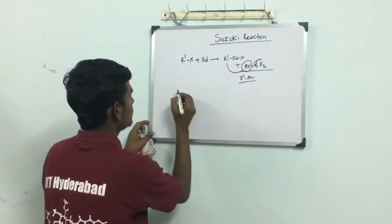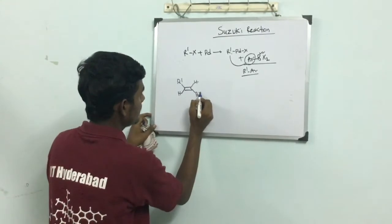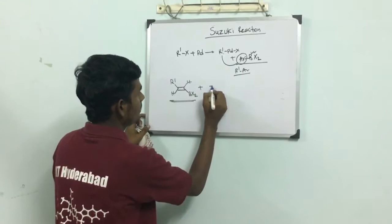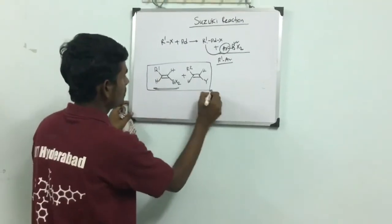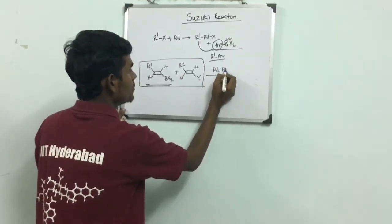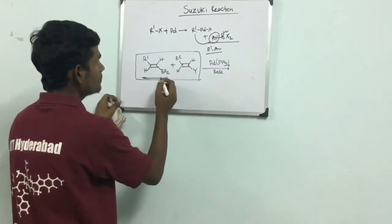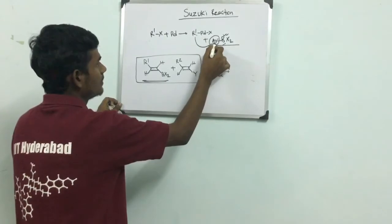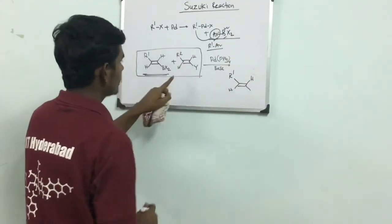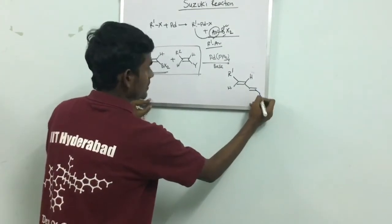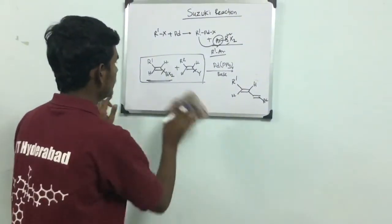I am writing the general way of what this reaction typically looks like. We have an alkyl R1 with H and H, here BX2 that is the boron compound, and the other compound R2 with H, H and Y. These two reactants in presence of palladium catalyst, suppose Pd(PPh3)4, and of course base. This is a cross-coupling reaction where boron serves as the second group transfer. So this and this get coupled to give the product. Let's check out how it happens.